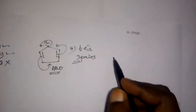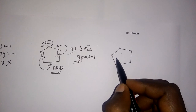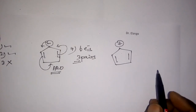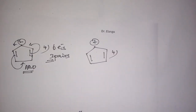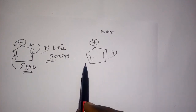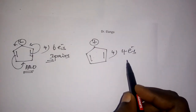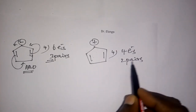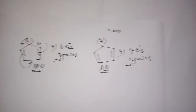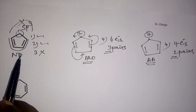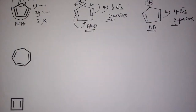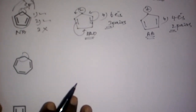For the cyclopentadienyl cation: cyclic conjugation is again allowed since the double bond connects with the cation. Counting pi electrons: two pi bonds give four electrons; the cation contributes zero electrons. So four electrons — two pairs. Two is an even number, so the cyclopentadienyl cation is anti-aromatic. Summary: cyclopentadiene is non-aromatic, the anion is aromatic, and the cation is anti-aromatic.